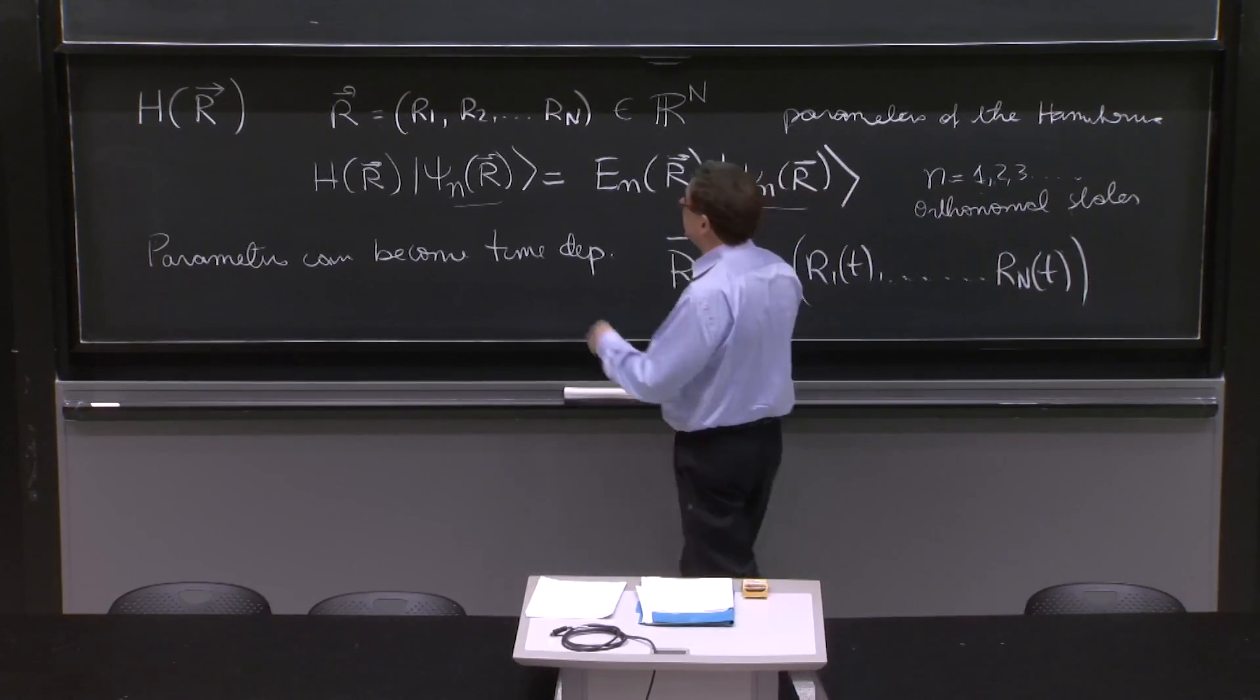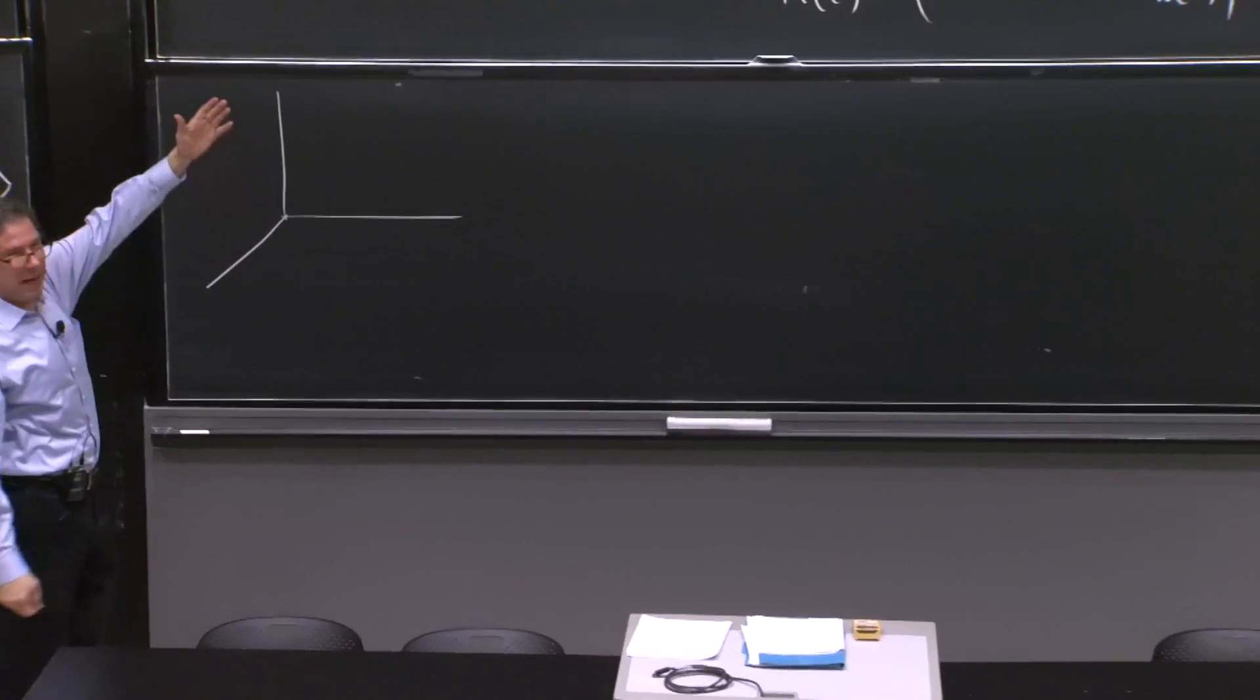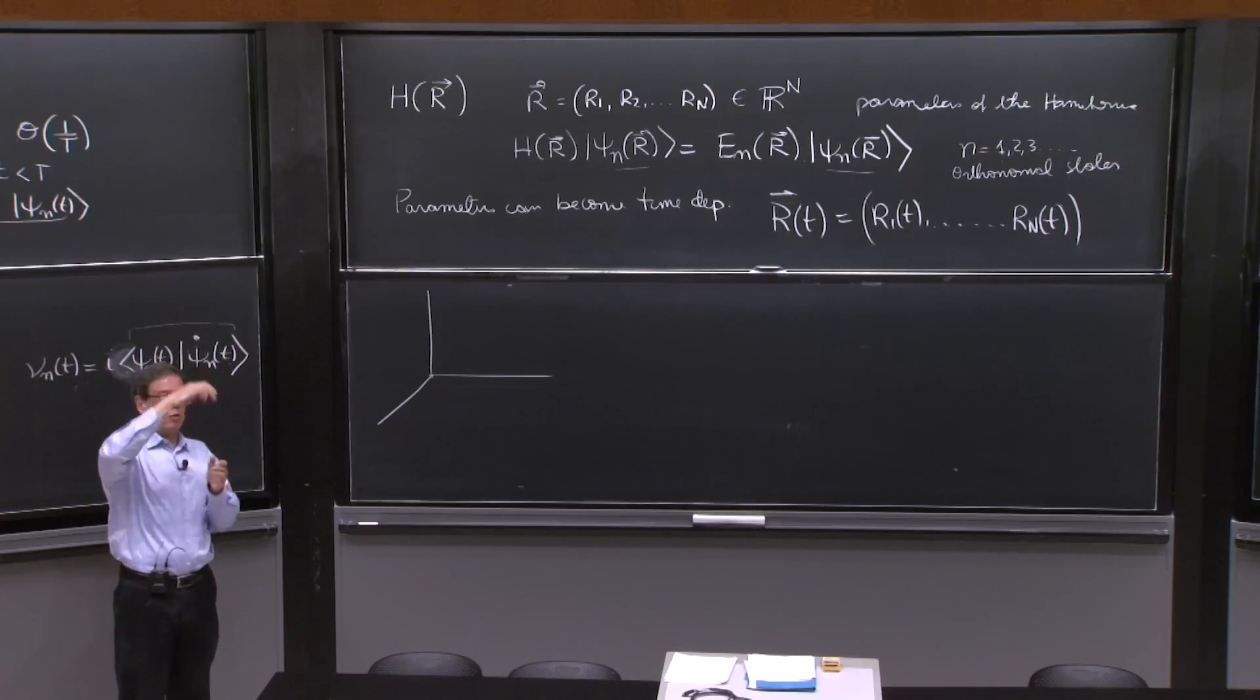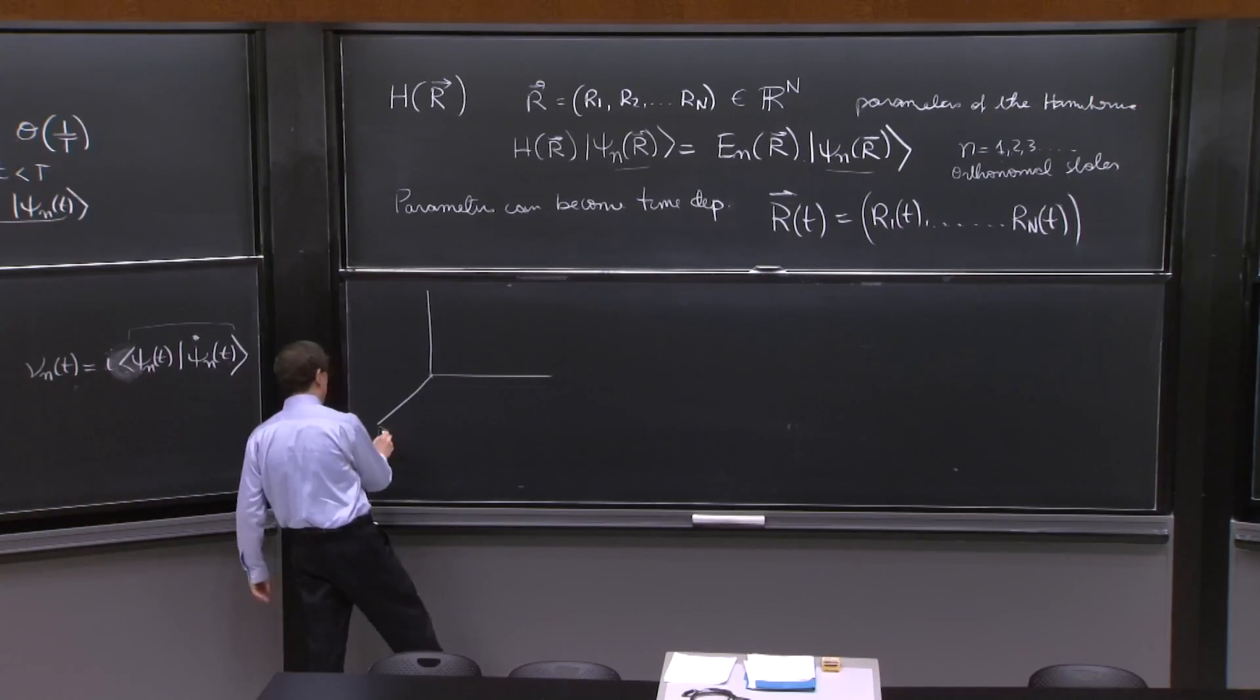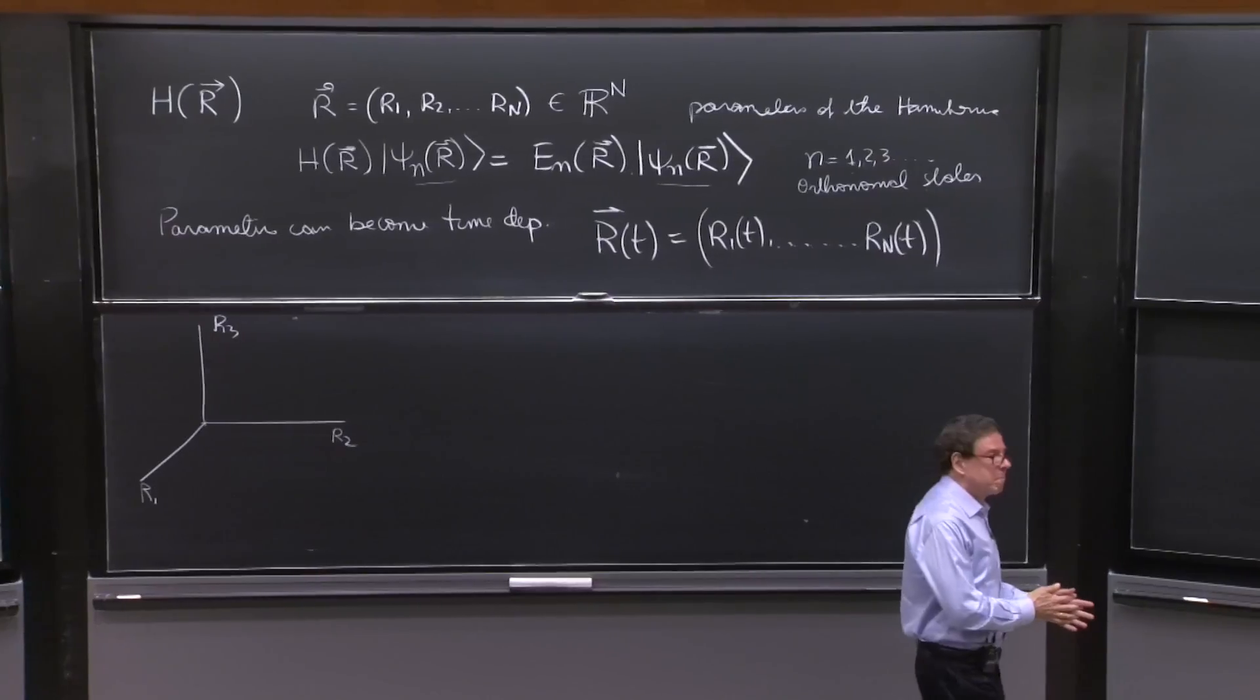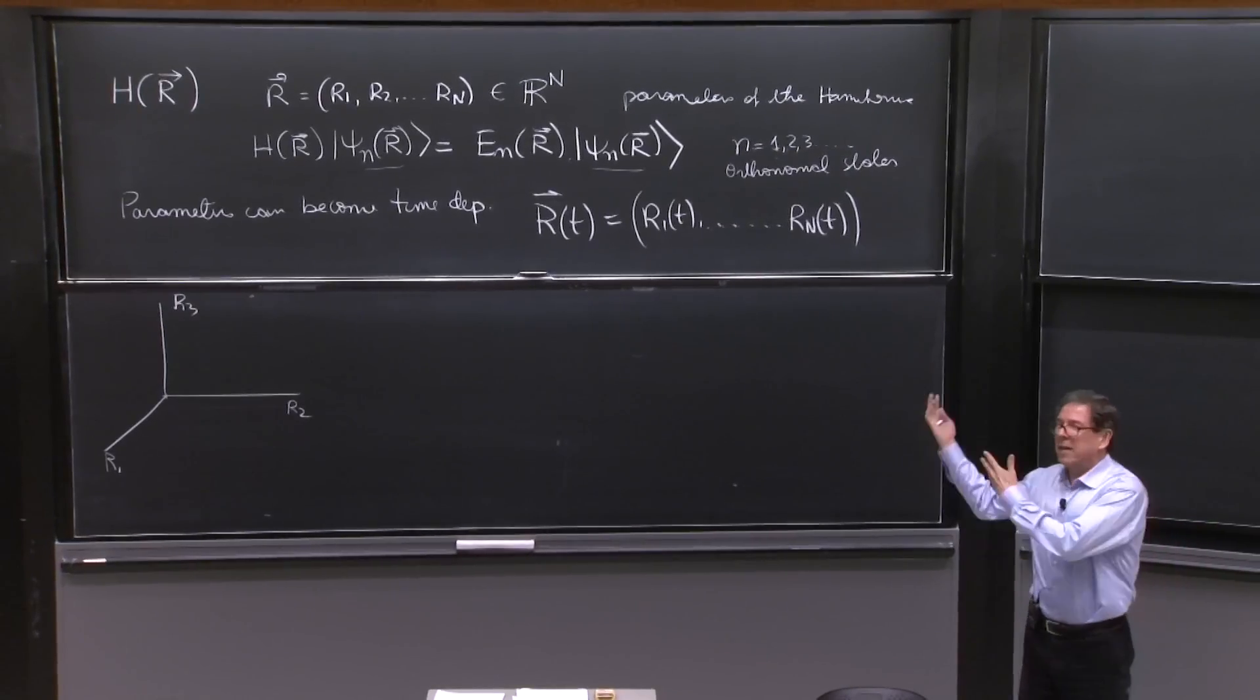So how do we represent this? Well, this is a Cartesian space of parameters. This is not our normal space. This is a space where one axis could be the magnetic field. Another axis could be the electric field. Another axis could be the spring constant. Those are abstract axes of configuration space.